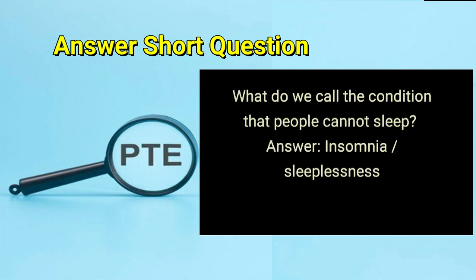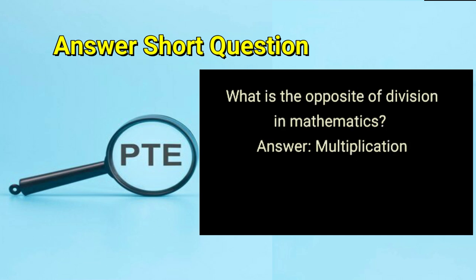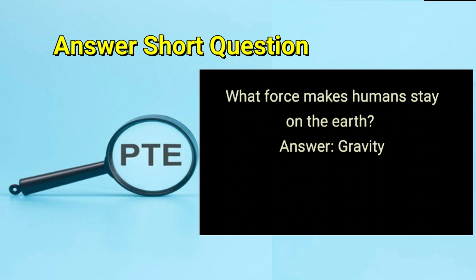What do we call the condition that people cannot sleep? Answer: insomnia or sleeplessness. What is the opposite of division in mathematics? Answer: multiplication. What force makes humans stay on the earth? Answer: gravity.